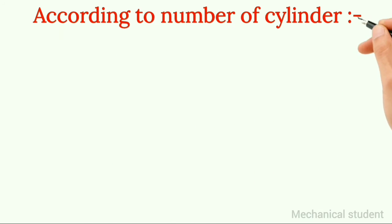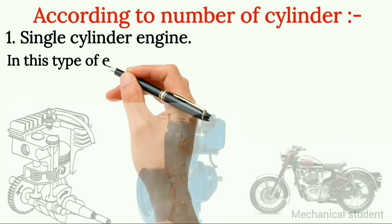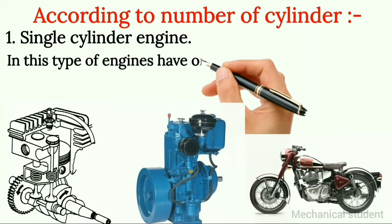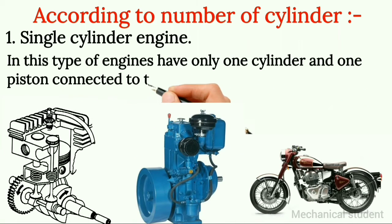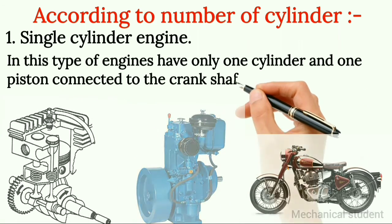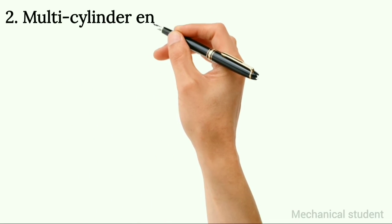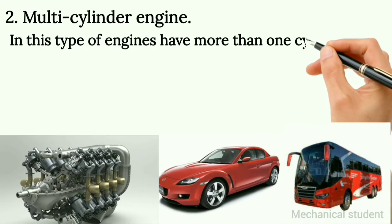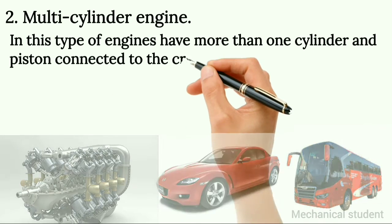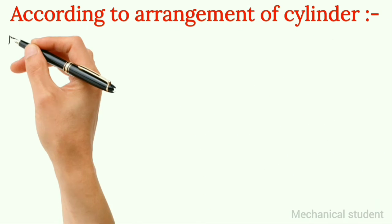According to number of cylinders. 1. Single cylinder engine: this type of engine has only one cylinder and one piston connected to the crankshaft. 2. Multi cylinder engine: this type of engine has more than one cylinder and piston connected to the crankshaft.